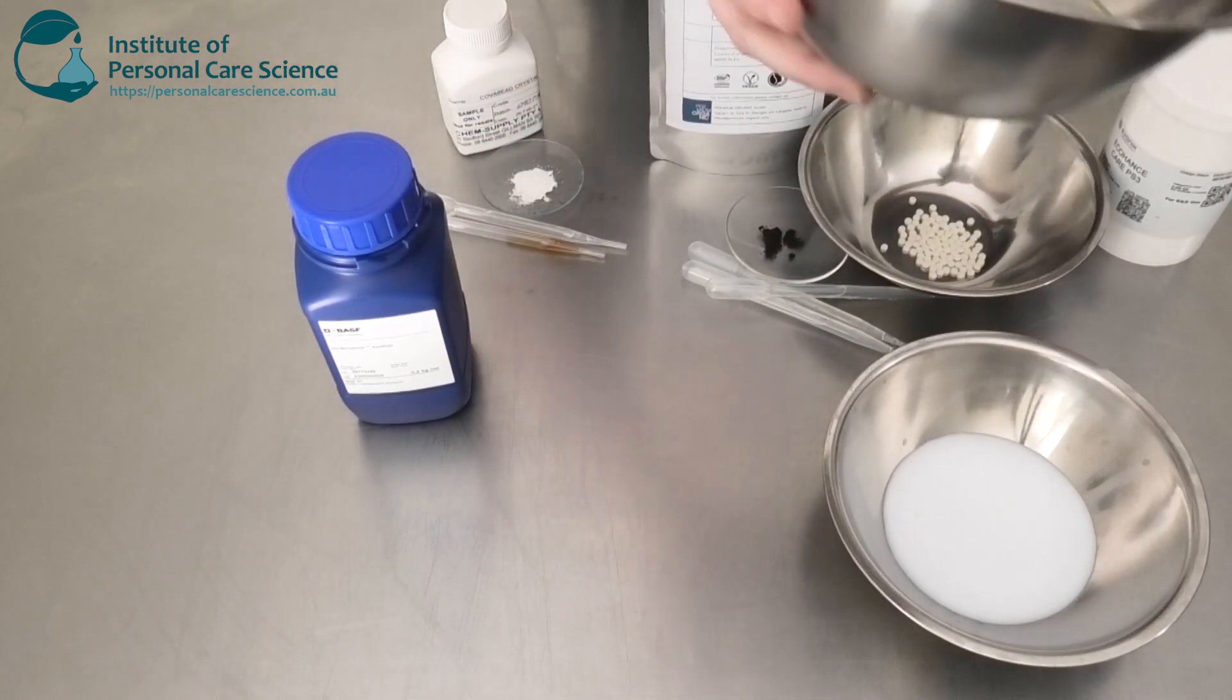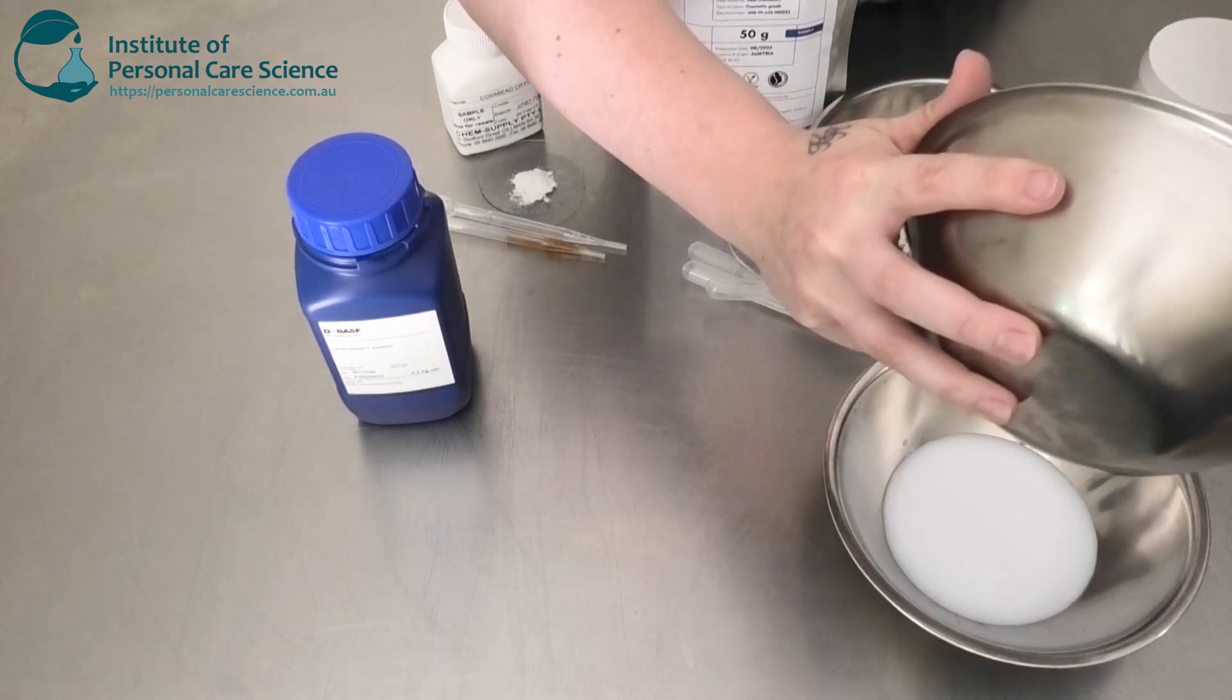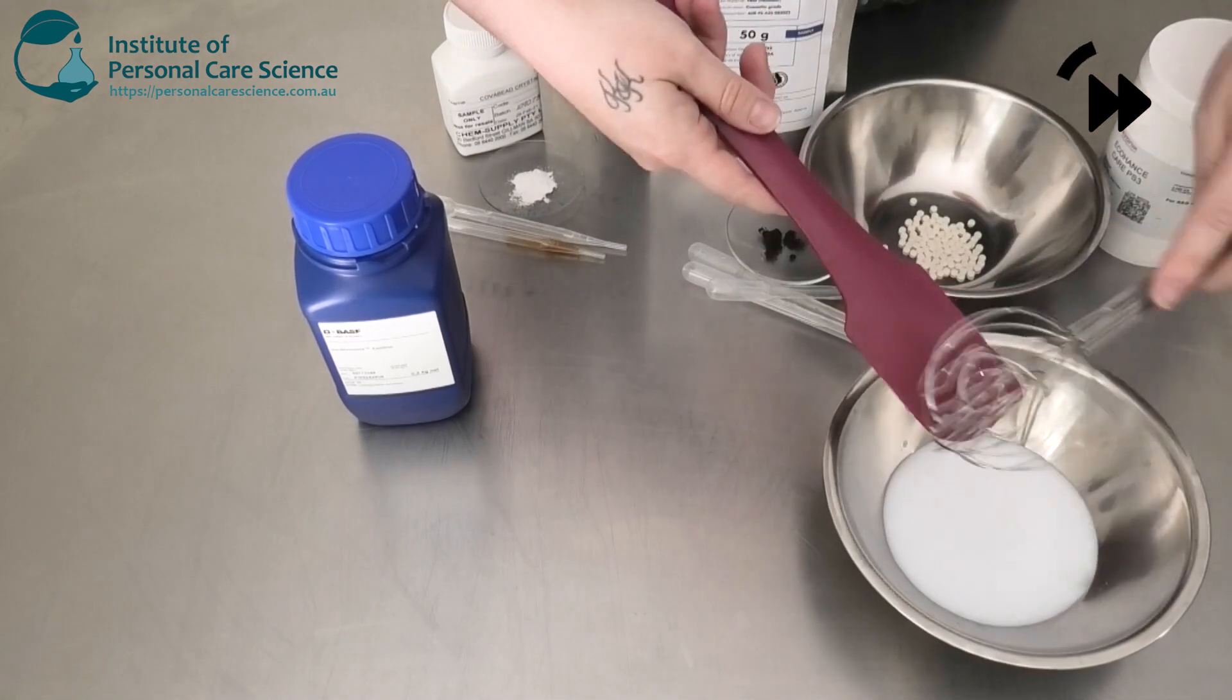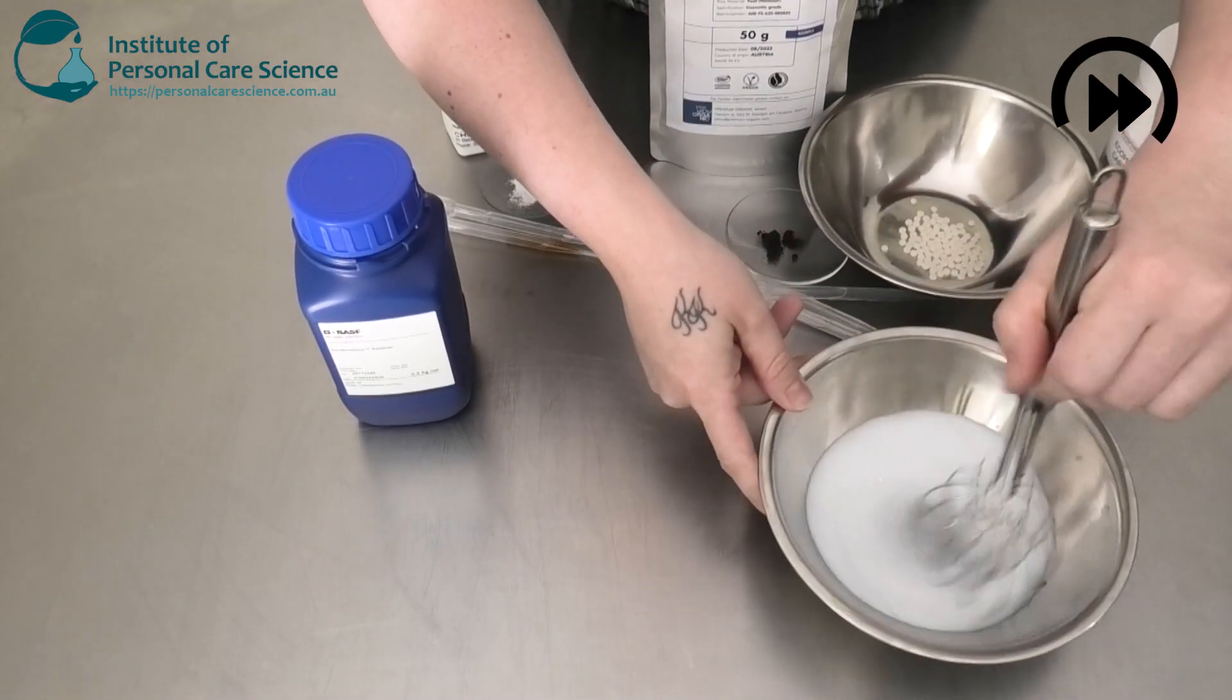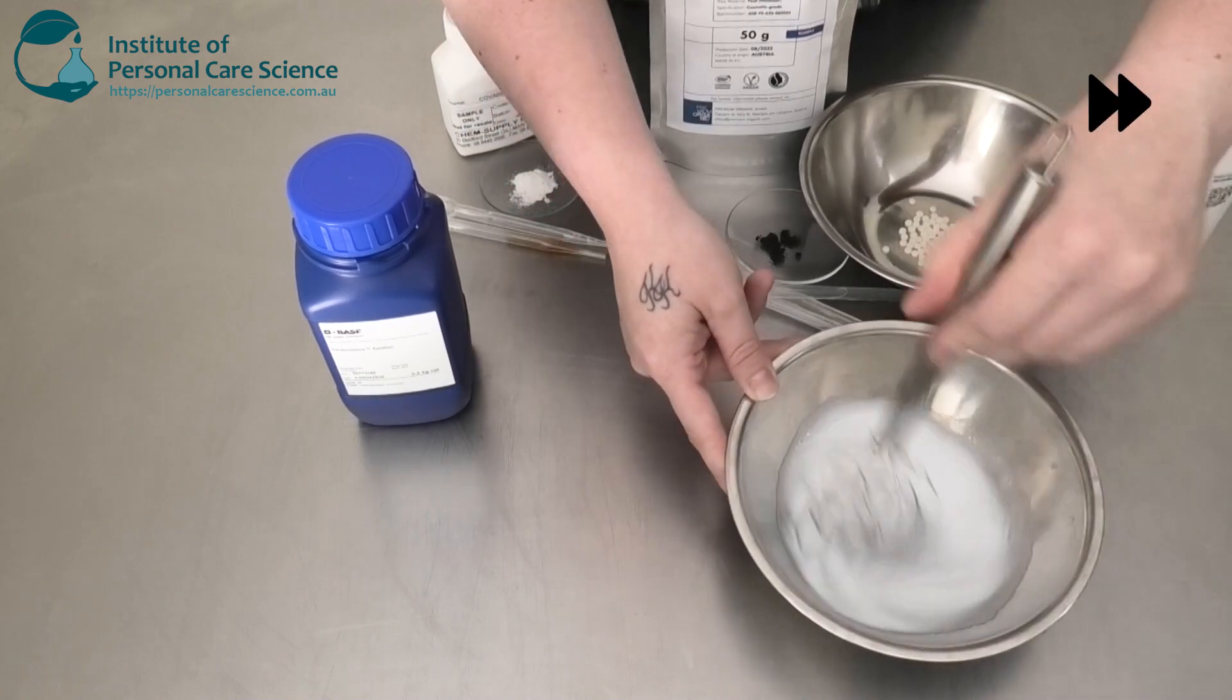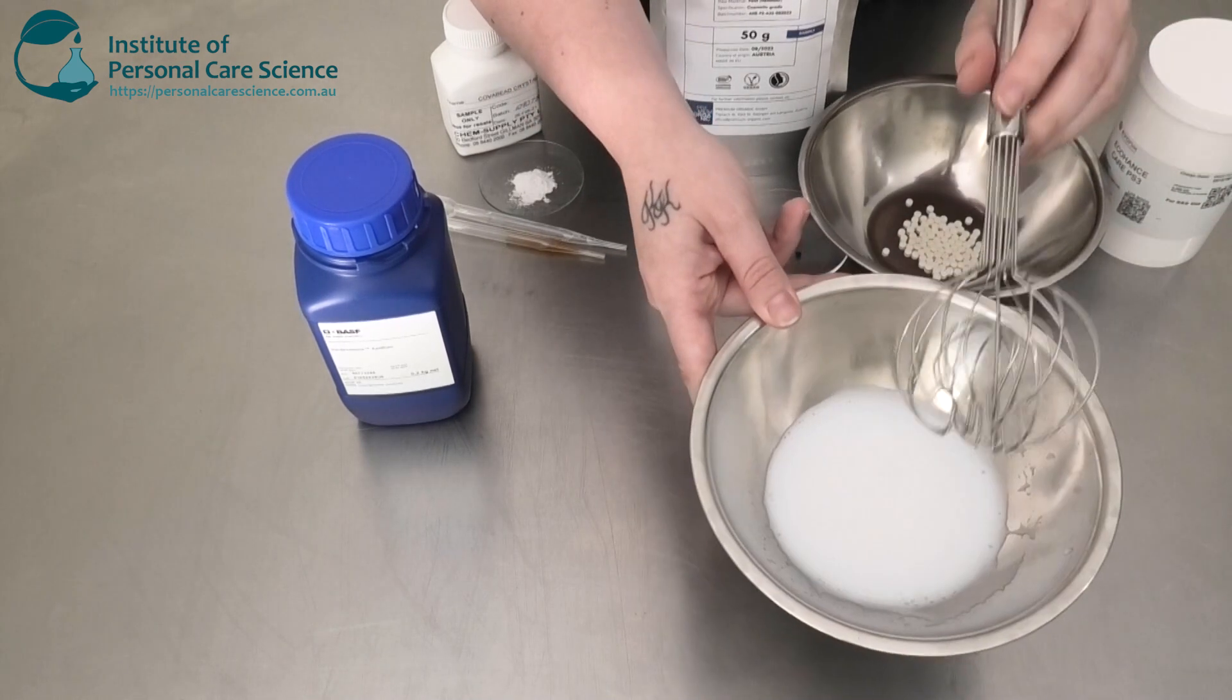So once you have a really nice smooth slurry, just add that into your water phase, and as you can see, a low viscosity gel has started to form there.